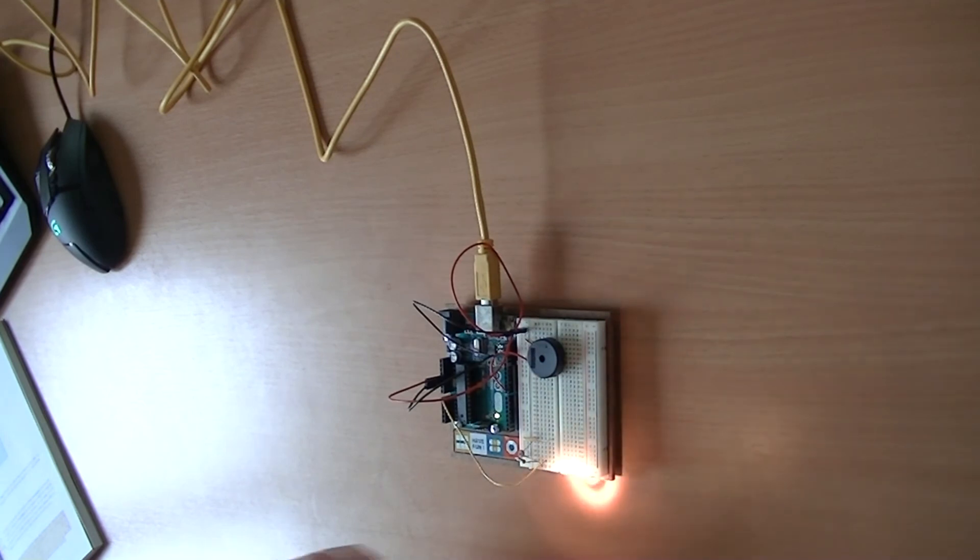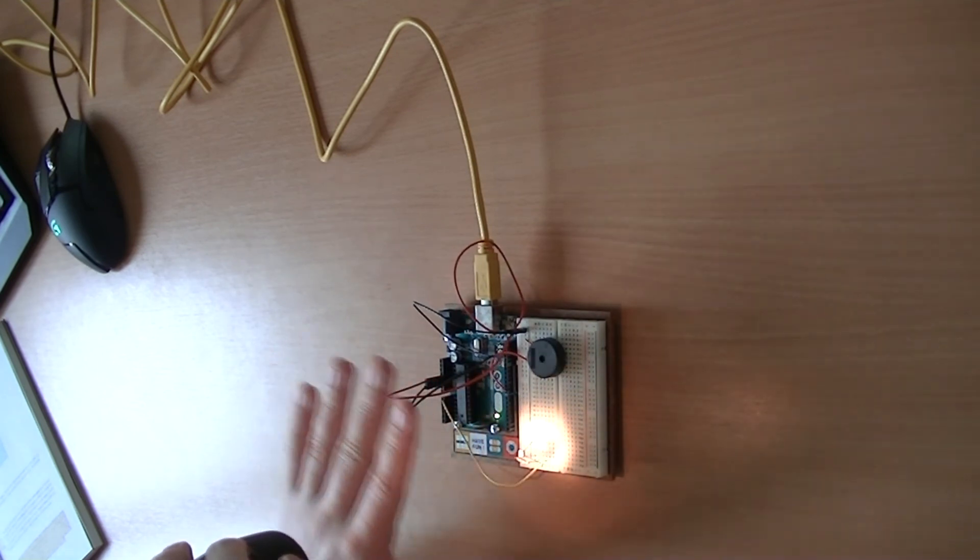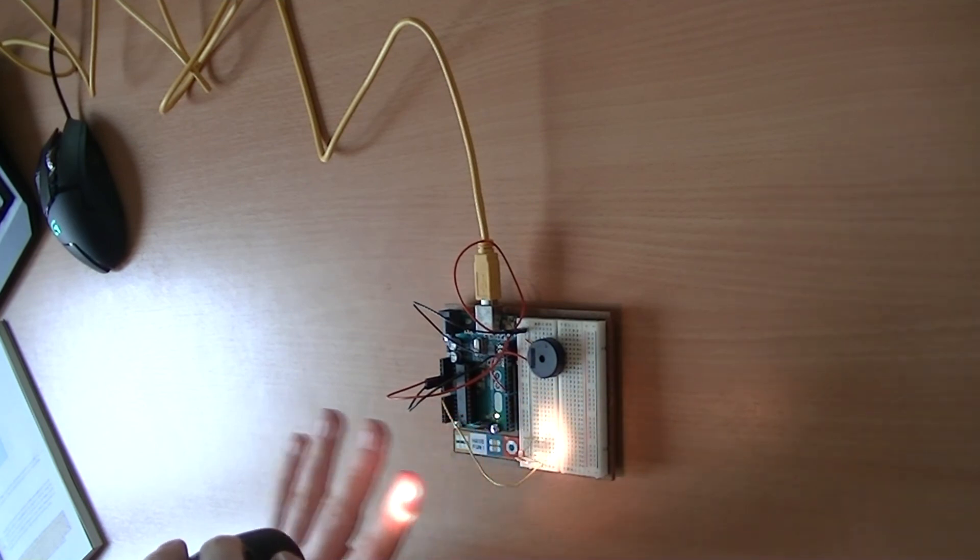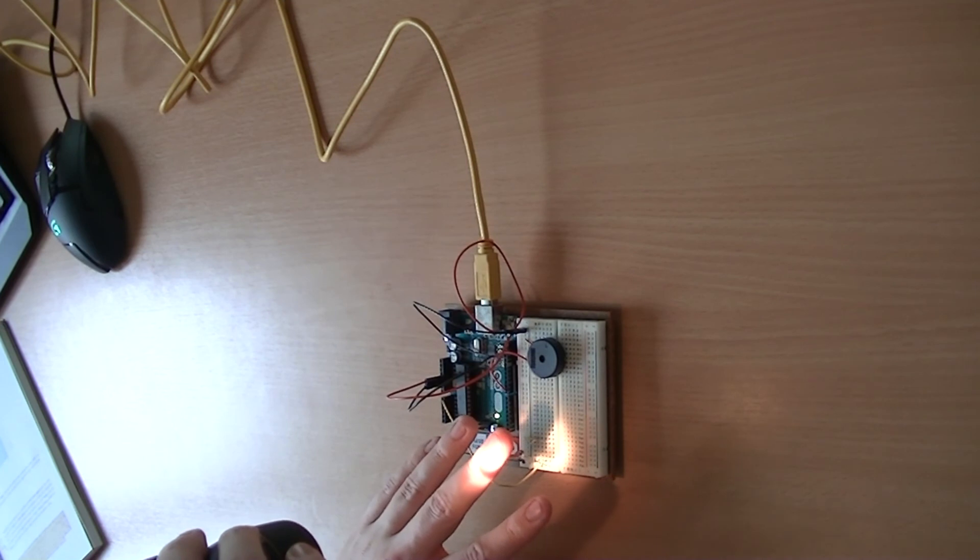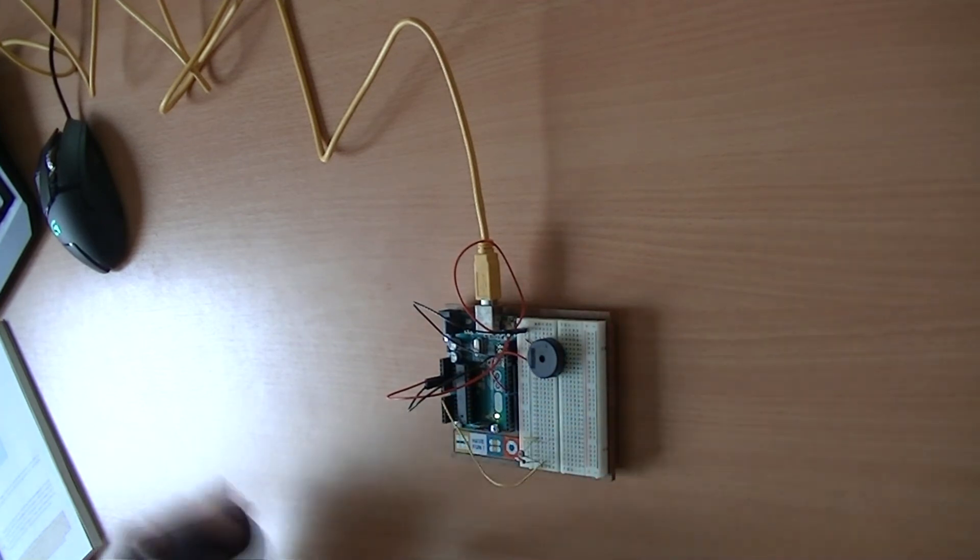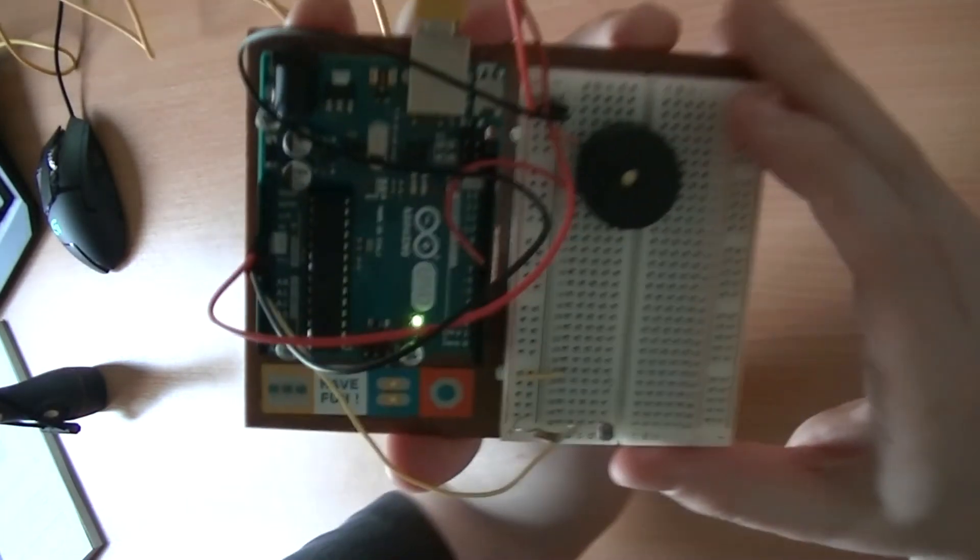So let's try it with a torch as well. Shine the torch directly onto the photosensor. And it is definitely making a different pitch depending on how much light is getting to the photosensor. So I can kind of create a little shadow there with my finger.